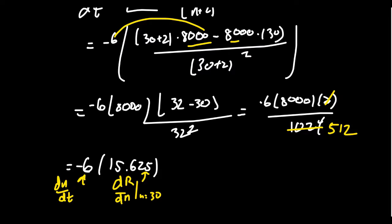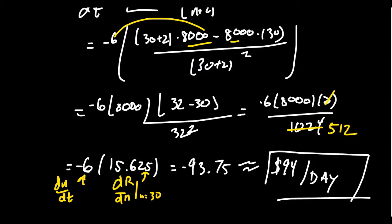15.625 times negative six gives us negative 93.75, which we can round to about -94. The city loses about 94 dollars per day at the start of the epidemic. Of course that changes at different times of the epidemic, but at the outbreak the revenue is decreasing at a rate of 94 dollars per day.